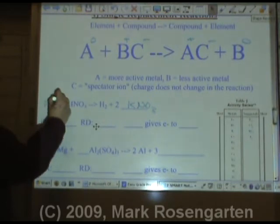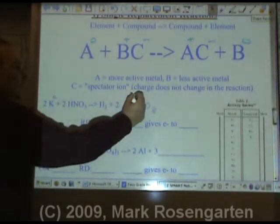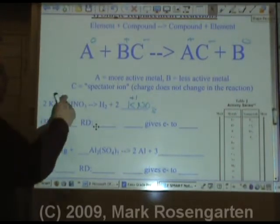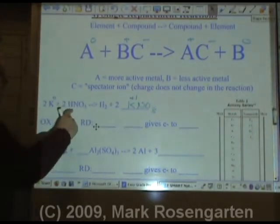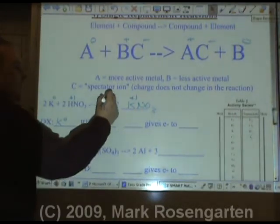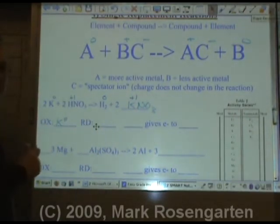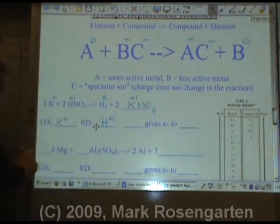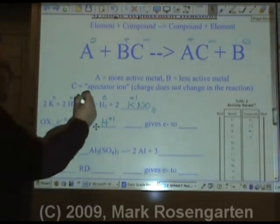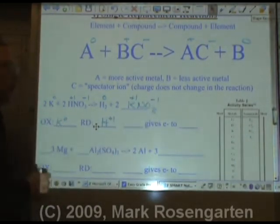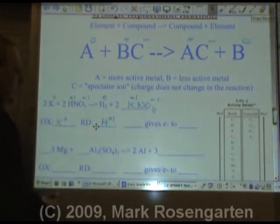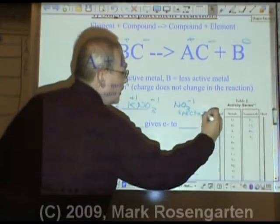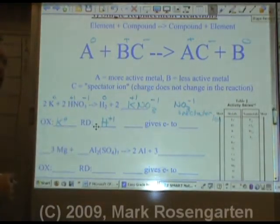K starts off as zero, but it ends as plus one. So K0 is oxidized because its charge becomes more positive. H starts off as plus one. It ends as zero because it's not bonded to another element. Therefore, H plus one's charge went down, it's reduced. But the nitrate remained minus one on both sides. Therefore, the nitrate is the spectator ion because its charge doesn't change.